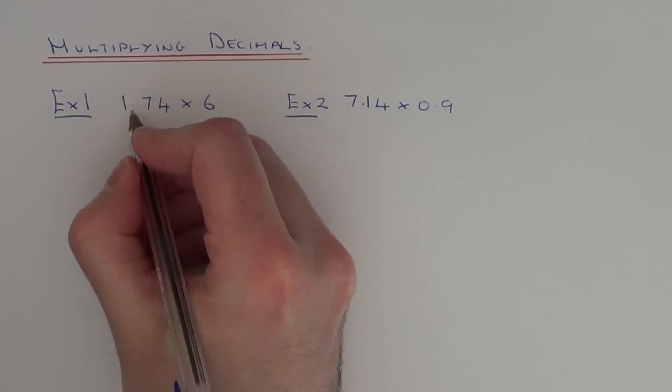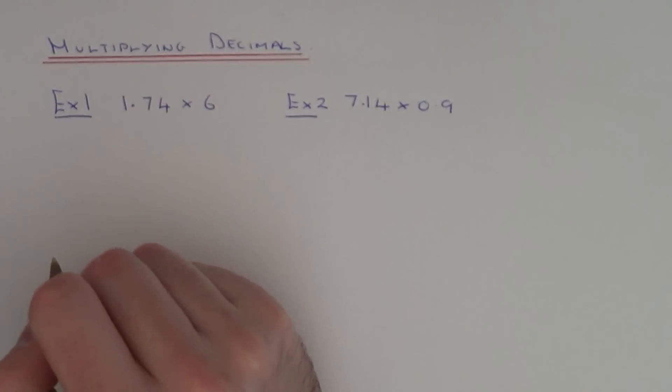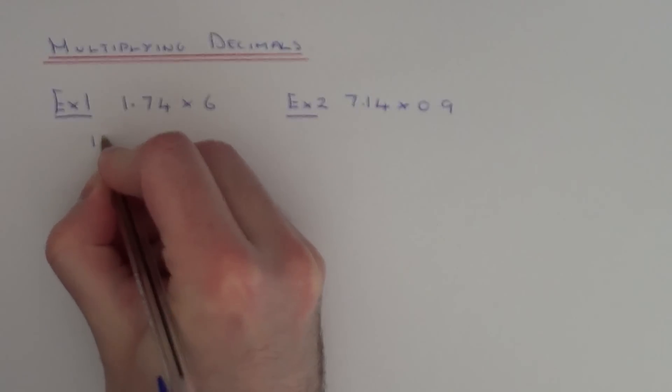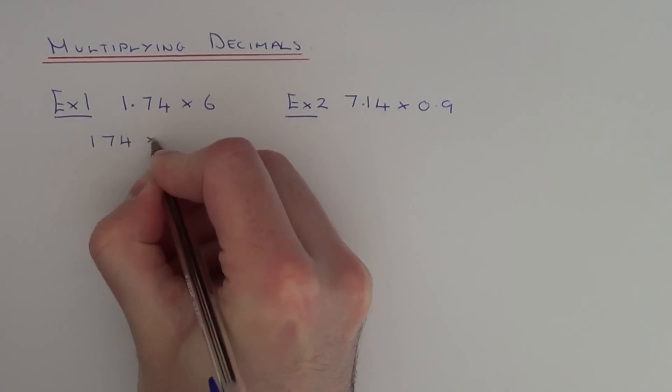So in example one, we've got to work out 1.74 times 6. So I'm going to ignore the decimal and just work out 174 times 6.